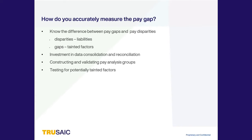As Joanne mentioned, pay analysis groups have to be of sufficient size both to make accurate measurements and to be meaningfully distinct from each other. The idea of tainted factors and the degree to which they are aligned with protected classes is really where they can fall from the analysis, because they are too strongly aligned with protected classes.